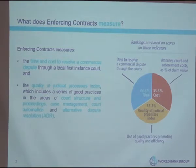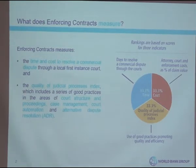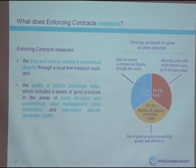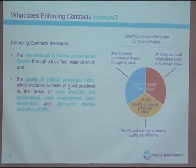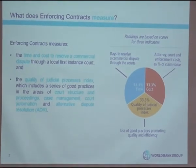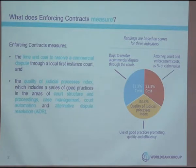The third index is about the quality of judicial processes index, and it's divided into four different sections: court structure and proceedings, case management, court automation, and alternative dispute resolutions.